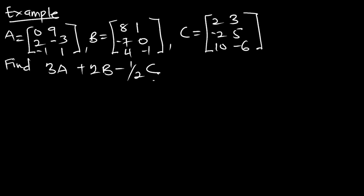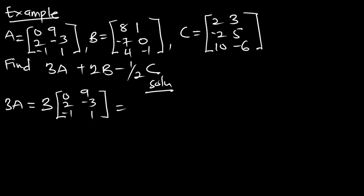We can do them separately: perform the operation on 3A, on 2B, and half of C, then do the final step. I prefer to do them one by one. So let me take 3A. That is going to be scalar 3 multiplying matrix A [0, 9; 2, -3; -1, 1], which gives us [0, 27; 6, -9; -3, 3].